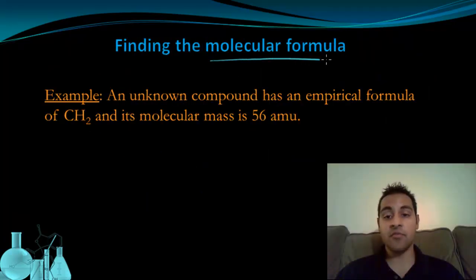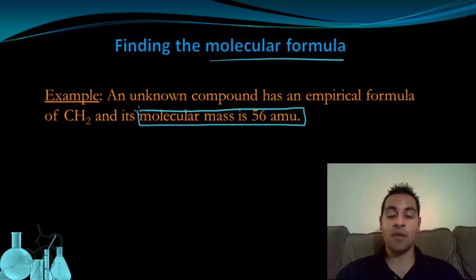If I want to find the molecular formula, I have to be given an additional piece of information that the other two examples did not have. That piece of information that I need to have is the molecular mass of the actual compound. In this problem, it's 56 AMUs for our unknown compound.